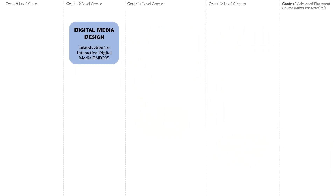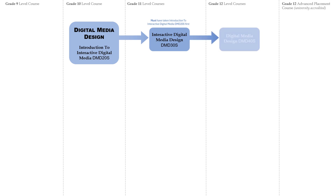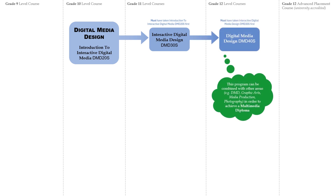Digital Media Design is an optional course that can be taken starting in Grade 9 or 10. The next levels of coursework progress from the previous courses. This program can be combined with other areas such as Graphic Arts, Media Production, or Photography in order to achieve a Multimedia Diploma.